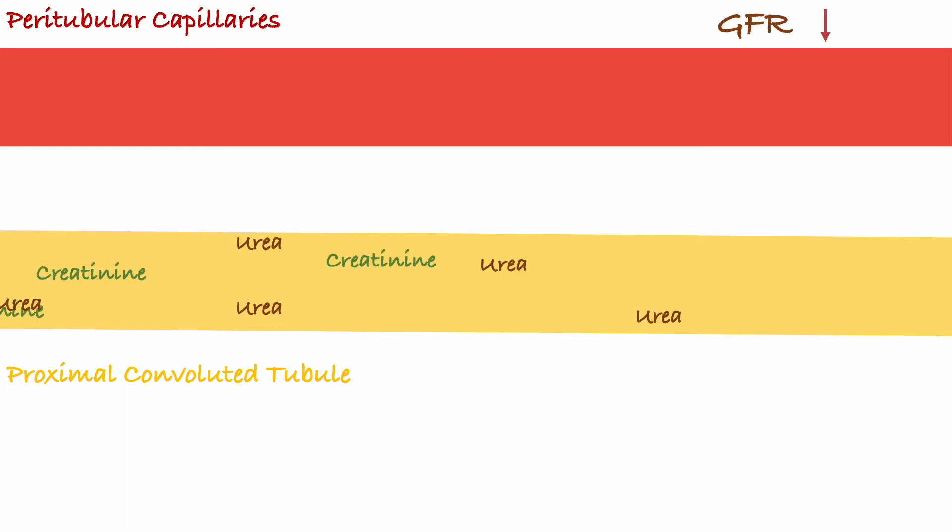When the kidneys lack perfusion as seen with pre-renal failure, they induce common pathways to maintain their GFR, such as afferent arterial vasodilation and efferent arterial vasoconstriction, and also induction of the RAS system. That will increase, or more so maintain, their GFR. However, over time the GFR slows down.